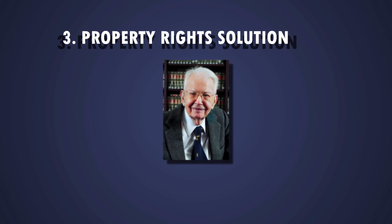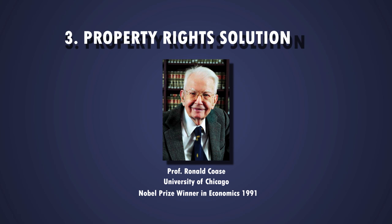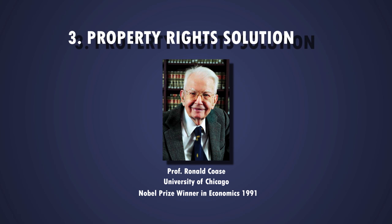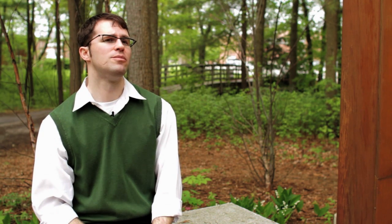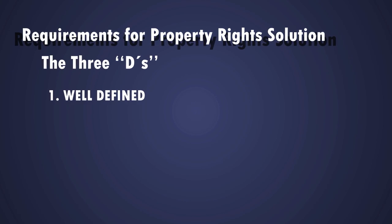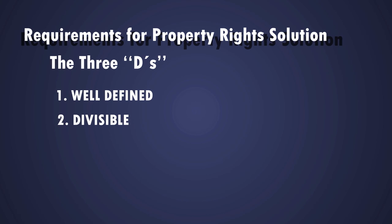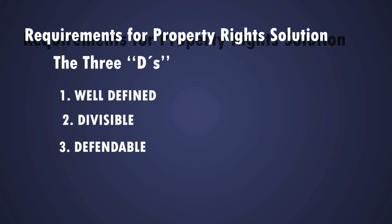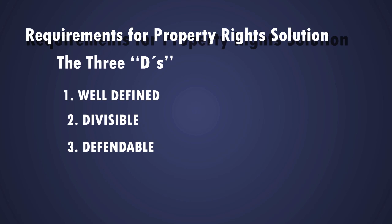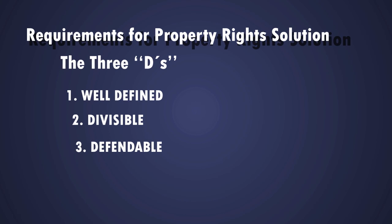The third broad way to address externalities is the property rights solution, suggested by economist Ronald Coase. He said if property is well defined, divisible, and defendable, and negotiation costs or transaction costs are low, simply by assigning the property right we can overcome the externality. Well defined means: what is the object over which the owner has rights, and in what manner may this owner exercise his or her rights? Divisible means: are these rights separable, and can they be traded? Defendable means: are these rights enforceable, recognized either via custom, by the community, or a third government agent?